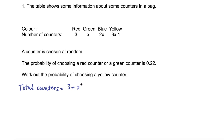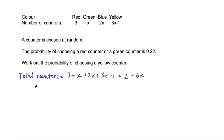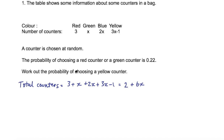So the first thing I'm going to do is write an expression for the total number of counters. We add all of them up: 3 plus x plus 2x plus 3x minus 1. Combining like terms: 3 minus 1 is 2, and x plus 2x plus 3x is 6x. So the total number of counters is 2 plus 6x. I can then use the given probability to work out x.